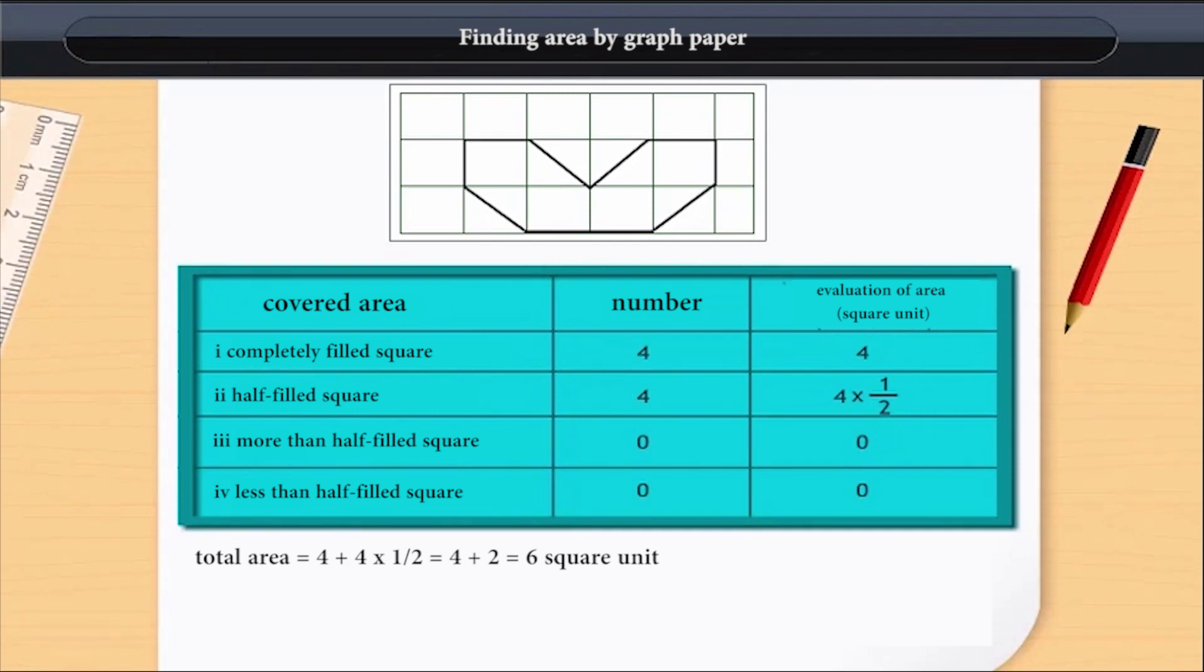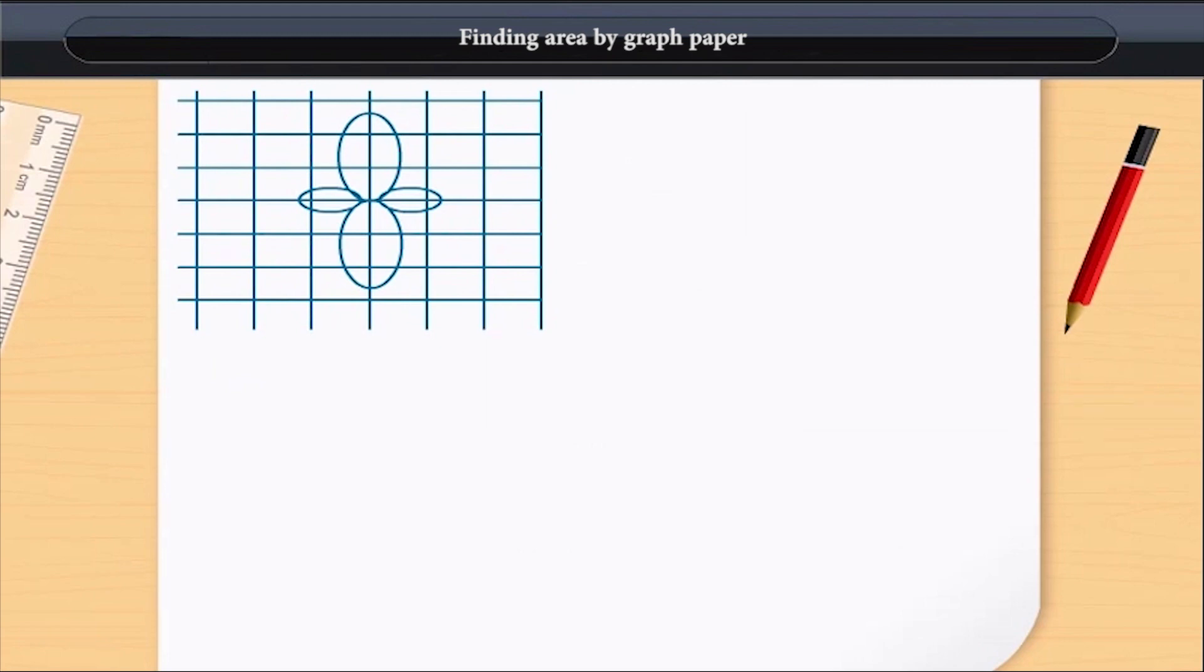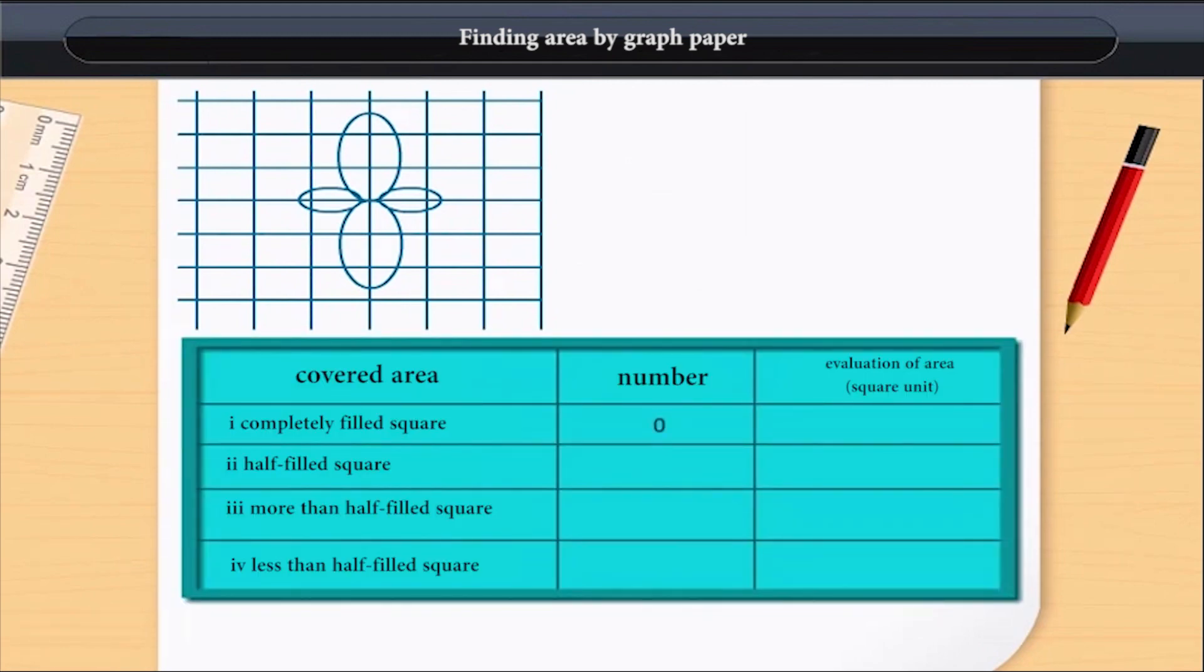The total area of the picture is 4 plus 4 multiplied by half, that is, 4 plus 2, which is equal to 6 square units.